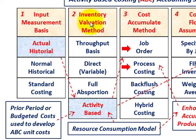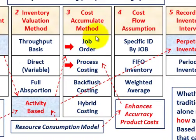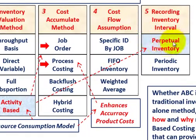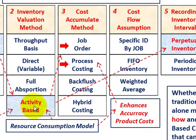Moving to the inventory valuation method: activity-based costing falls under this part. If you use activity-based costing as your inventory valuation method, it wouldn't be going into a cost accumulation method. For the cost flow assumptions, your activity-based costs would move directly into a perpetual inventory account — that's part five of the cost accounting system.